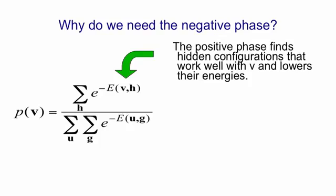And it finds those terms by settling to thermal equilibrium with the vector v clamped, so that it can find an h that goes nicely with v, that is, gives a nice low energy with v. Having sampled those vectors h, it then changes the weights to make that energy even lower.